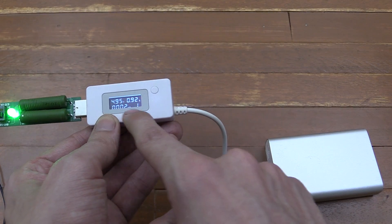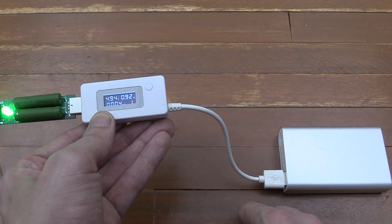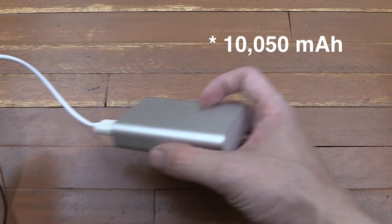So we can basically leave this running until the battery stops outputting power, and then we'll be able to read this to see how much power we've managed to get out of it, and whether it truly is 10,500 milliamp hour.